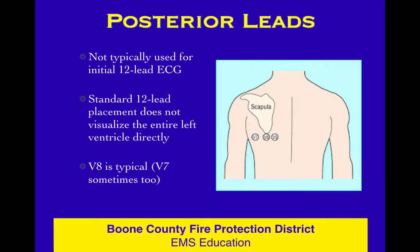That's the standard 12-lead placement — the standard chest leads that look at the left ventricle. There are times when we want to look at the posterior wall of the left ventricle, so we use posterior leads. V7, V8, and V9 can be used, but I just like to have a V8. V8 is at the tip of the scapula, the mid scapular line, at the same level as V4 and V6. I take the wire off of V6, move it around to V8, and run the 12-lead again. V8 is a good lead to look at the posterior wall.